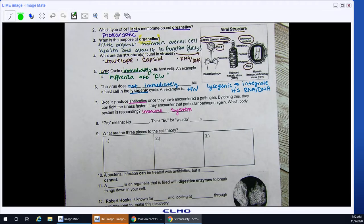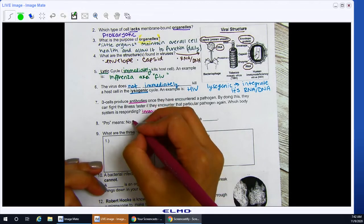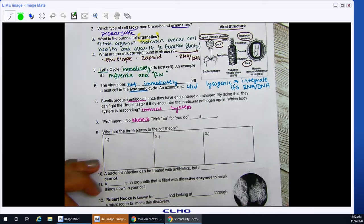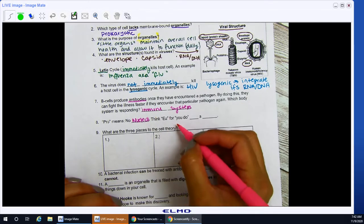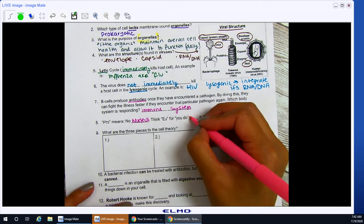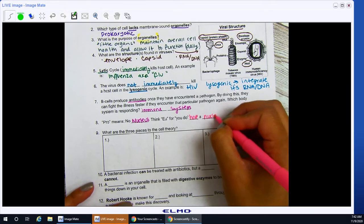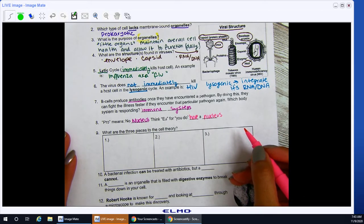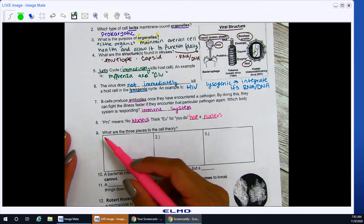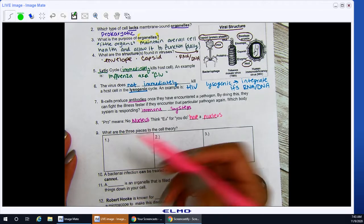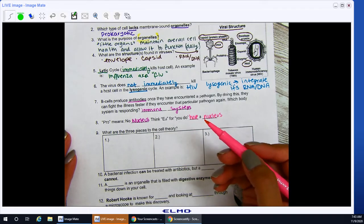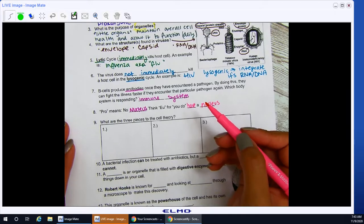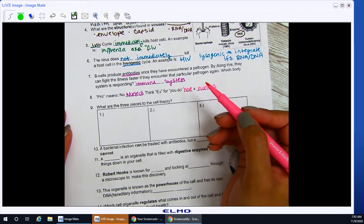Number eight, pro means no. Pro means no what? This one should be easy. No nucleus. No nucleus. I thought that was a different pink. It's not. Let's try this one. Think you for you do. You do have a nucleus. Okay, eukaryotic cells, they have organelles. They have a nucleus. And they are also much larger than prokaryotic cells. Prokaryotic cells are like bacteria. They're very small. And they do not have any organelles. Their genetic material is just floating around. It doesn't have a nucleus.